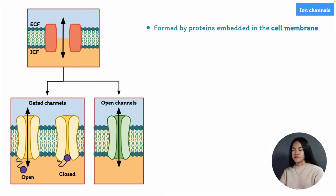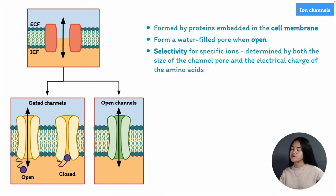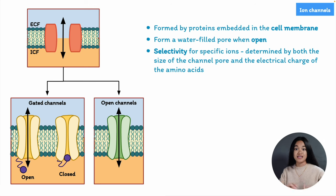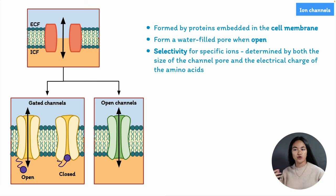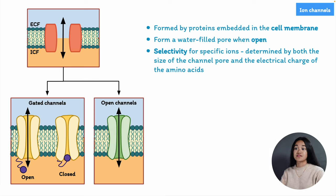When ion channels are open, they create an open pore or passage between the extracellular fluid and the inside of the cell. They are characterized by having specificity or selectivity for different types of ions — for example, there are channels selective for sodium ions, potassium ions, or calcium ions. A channel that only allows sodium to pass is referred to as a sodium channel. What determines whether an ion can move through the open pore is influenced by the charge of the ion as well as the size of the molecule.